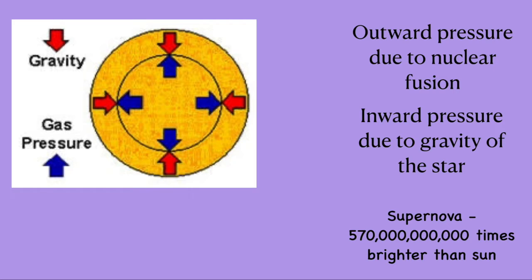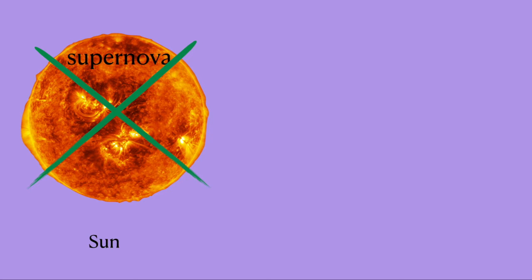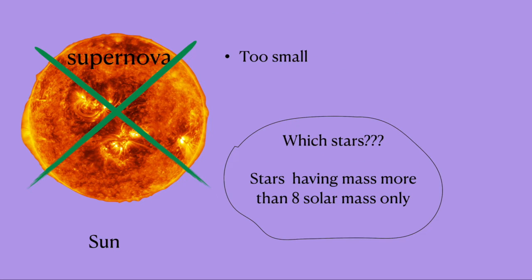Our sun cannot go through the phase of supernova at its death because it is too small. Only stars having more than 8 solar mass can go through supernova.